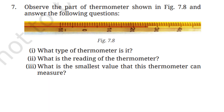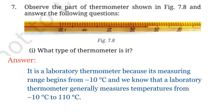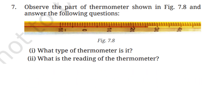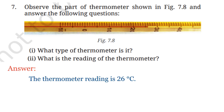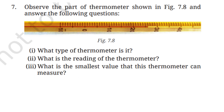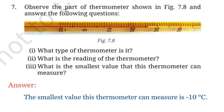Question 7: Observe the part of the thermometer shown in figure 7.8 and answer the following questions. What type of thermometer is it? It is a laboratory thermometer because its measuring range begins from −10°C, and a laboratory thermometer generally measures temperatures from −10°C to 110°C. The thermometer reading is 26°C, and the smallest value this thermometer can measure is −10°C.